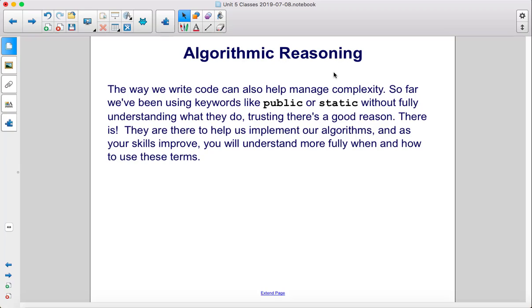The way we write code can also help manage complexity. So far, we've been using keywords like public or static without fully understanding what they do, trusting there's a good reason. There is. They are there to help us implement our algorithms, and as your skills improve, you will understand more fully when and how to use these terms.